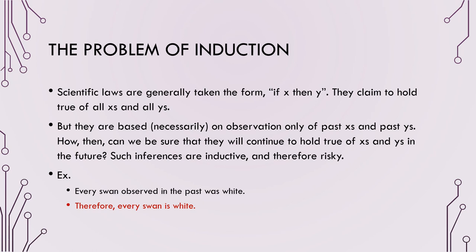The problem with induction is that events from the past don't always relate to future predictions. When we try to make predictions, we make them based on past information hoping the past resembles the future — but that's not always true. For instance, if I had only ever observed white swans, I may conclude that all swans are white. However, if I never visit Australia, I may not know that swans there can be black. Therefore, research based on the past wouldn't necessarily create good predictions, because past events don't always resemble what is to come.